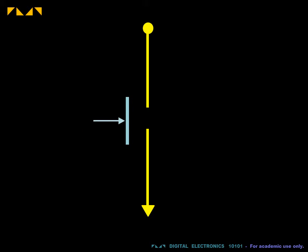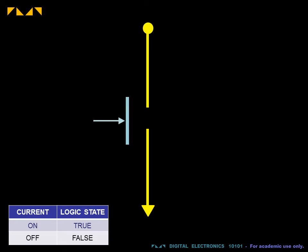Consider that the input current can represent an input logic state. True when on, false when off. Likewise, the output current can represent the output logic state.